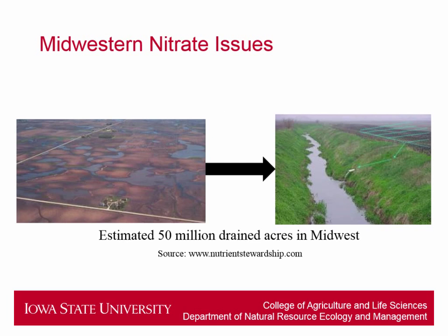So the Midwest nitrate issue. Without tile drainage, a lot of the Midwest would look like the picture on the left here — a lot of standing water, a lot of wetlands, basically a wet prairie. However, over the last 100 plus years, we have tile drained and converted a lot of land to pattern tile drain land, which looks something like these neon green lines right here.